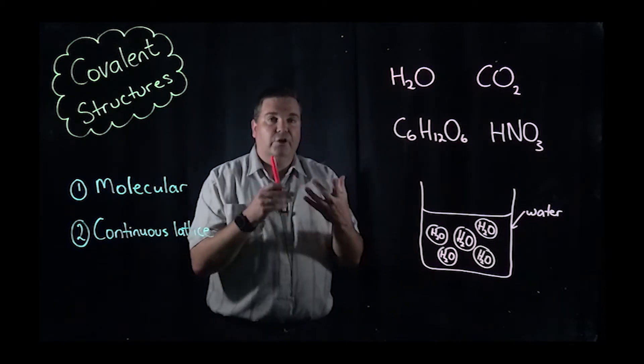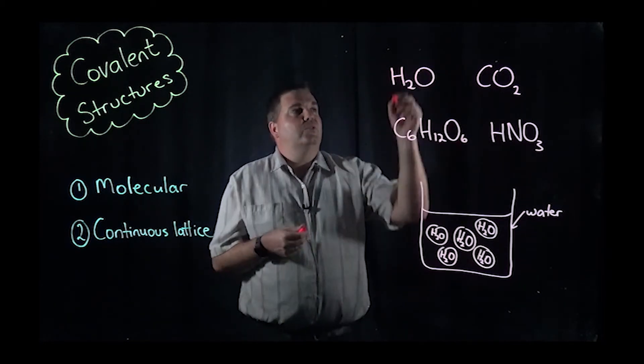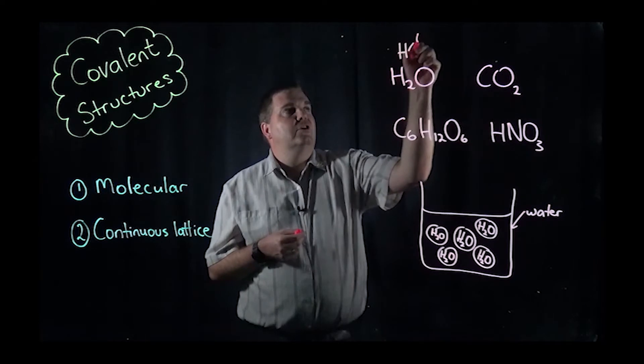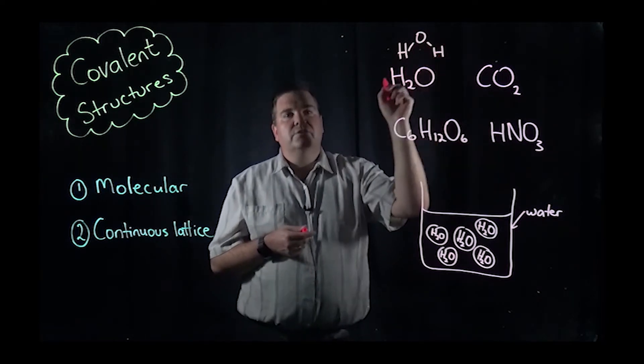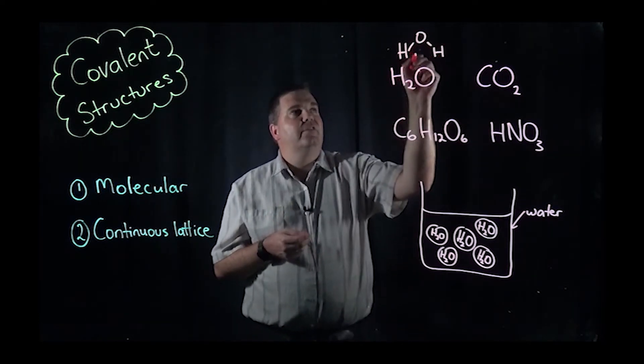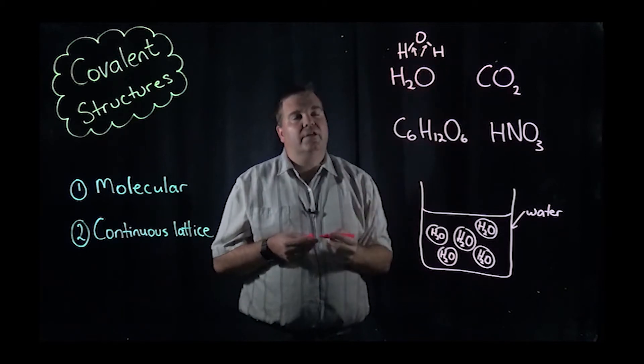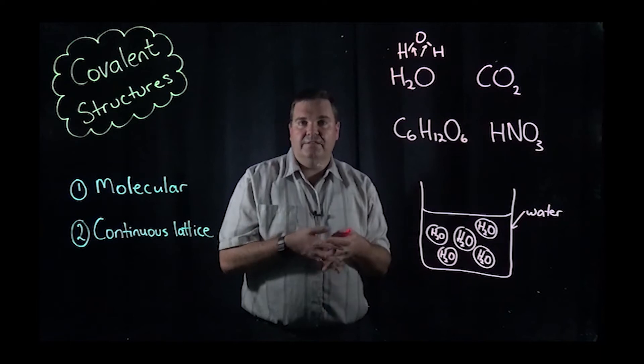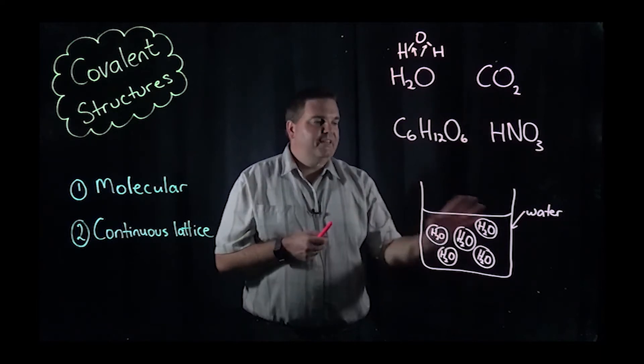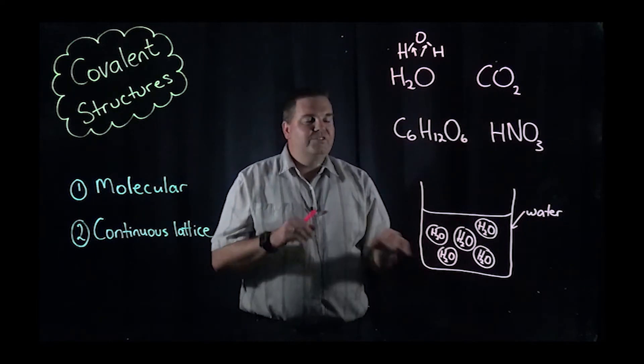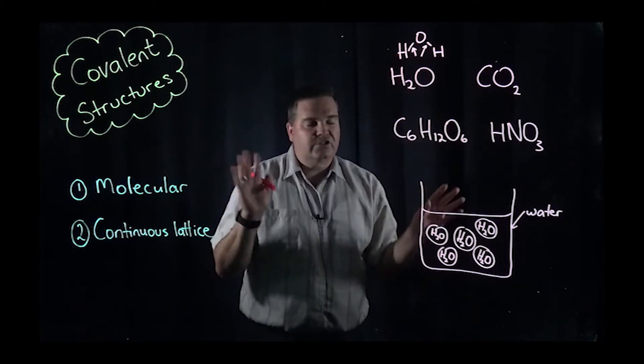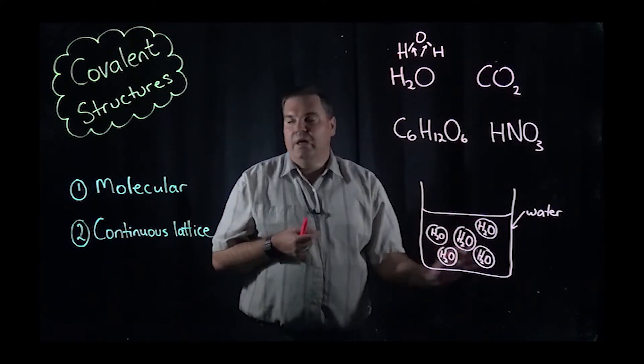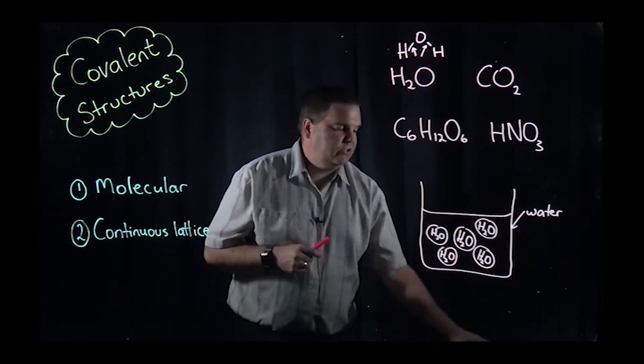All these little molecules operate individually. Within the molecule, there is a covalent bond. So with water, it's a hydrogen to oxygen to hydrogen like that. We have covalent bonds which exist by the overlap or sharing of valence electrons. But within a solution of water, we don't have a big three-dimensional structure, we have individual molecules. That's what we call molecular, a molecular structure.